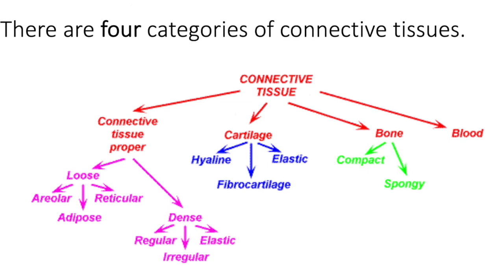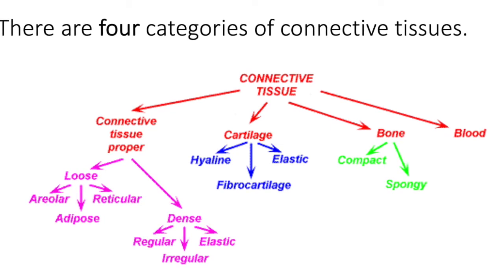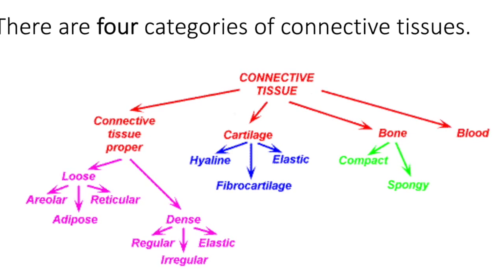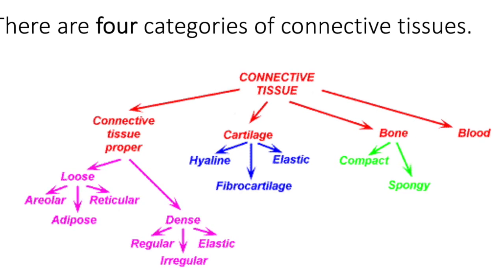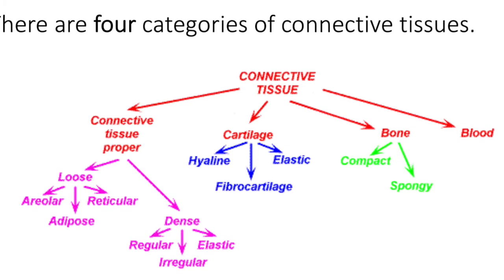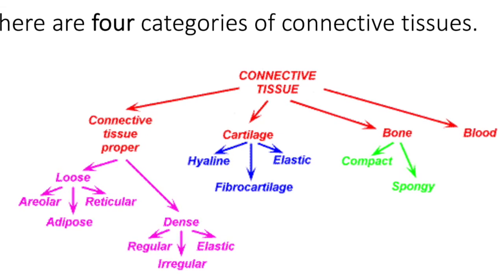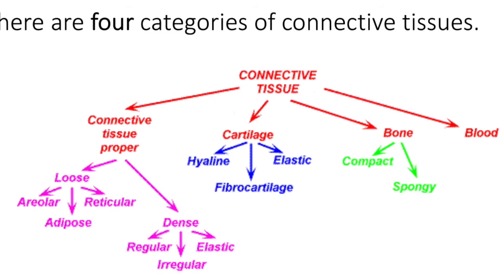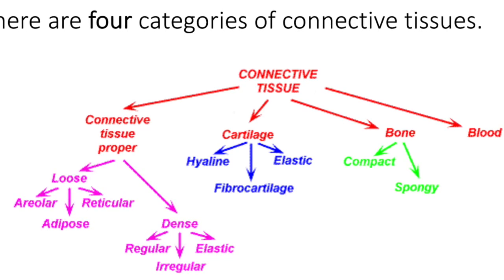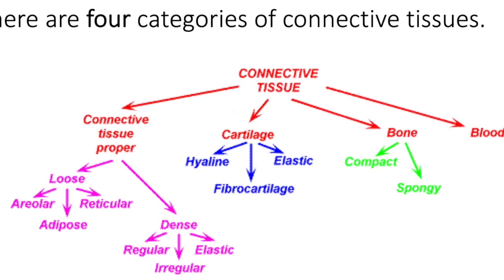Connective tissue proper is further subdivided into loose and dense. The first three that we talk about are the loose connective tissues: areolar connective tissue, reticular connective tissue, and adipose connective tissue. The other three, the dense connective tissues, are dense regular connective tissue, dense irregular connective tissue, and elastic connective tissue.